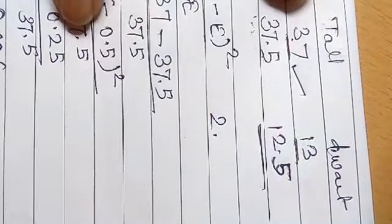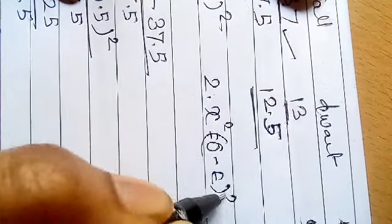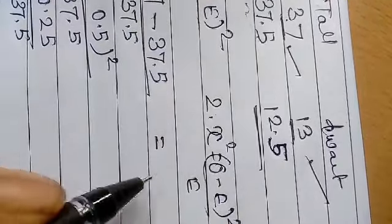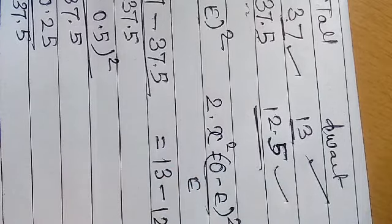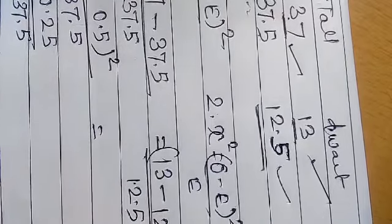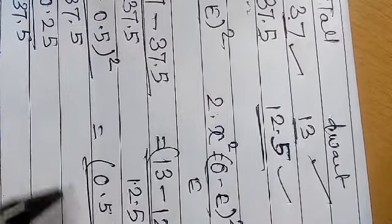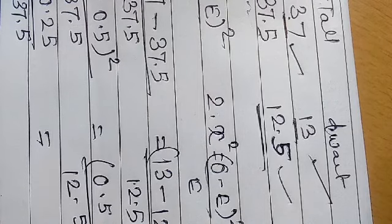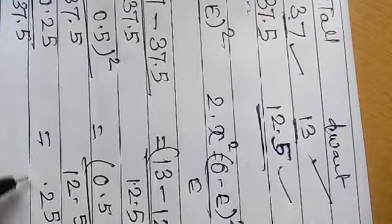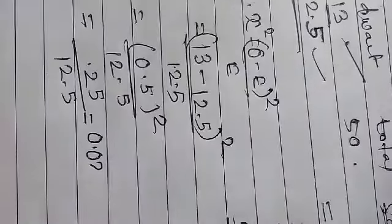For dwarf plants: chi-square equals (13 minus 12.5) whole square divided by 12.5 = (0.5)² / 12.5 = 0.25 / 12.5 = 0.002. This is the chi-square for the second observation.